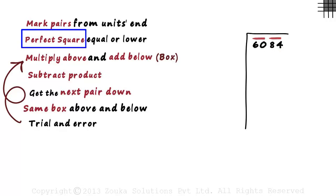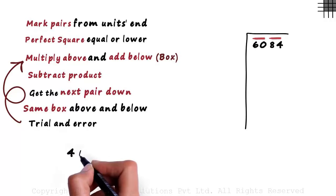Now we look for a perfect square which is equal or just lower than the first pair. The first pair is 60. Since 60 is not a perfect square, we look for a square closer to it. 49 is a perfect square close to 60. So is 64. But remember, we choose the perfect square closest and just lower. So 49 is the perfect square we are looking for.